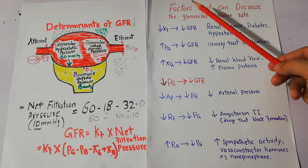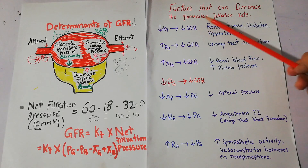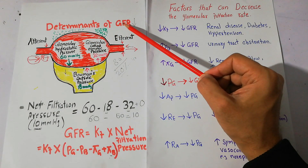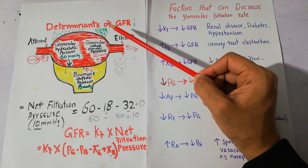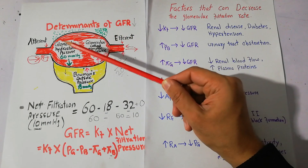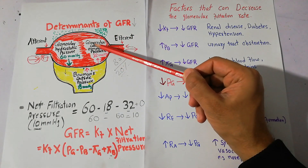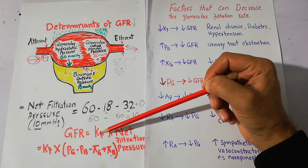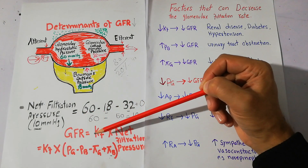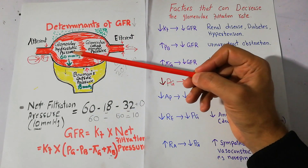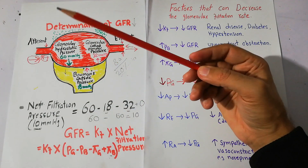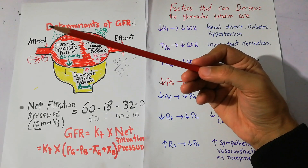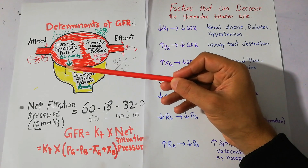Today in this lecture, we are going to talk about factors that can decrease glomerular filtration rate. As we have started discussing determinants of GFR, we have discussed different determinants like glomerular hydrostatic pressure, glomerular colloid osmotic pressure, Bowman's capsule pressure, and glomerular capillary coefficient Kf. We are discussing these determinants under the urine formation process because the primary purpose of the kidneys is to form urine, and the urine formation process begins with filtration of the plasma.